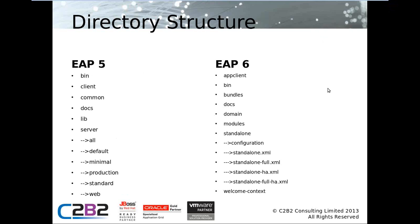First up, the directory structure. I'm not going to go into too much detail here because it's not particularly exciting. Basically, we have the BIN and the DOCS directories — those are the only two that are the same in EAP5 and EAP6. The key changes are with regards to the domain mode and the standalone directory, which is a big change in EAP6. There's also the new modules folder, which I'll also discuss.